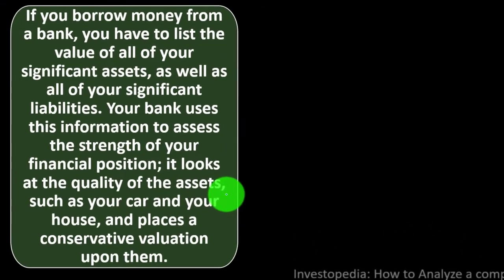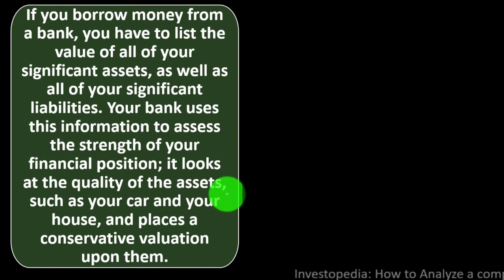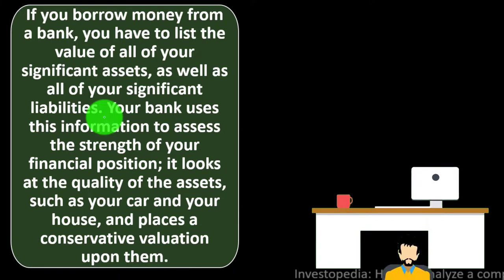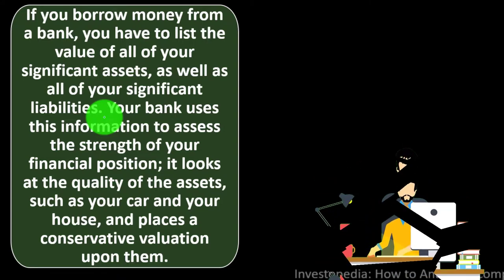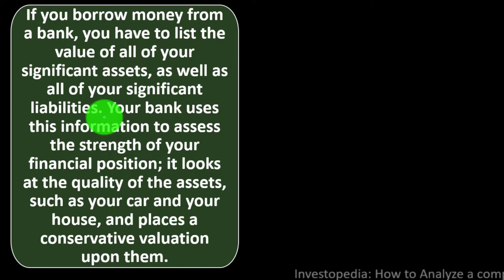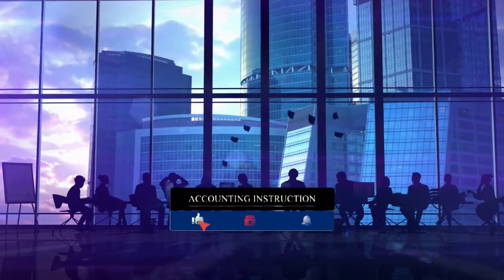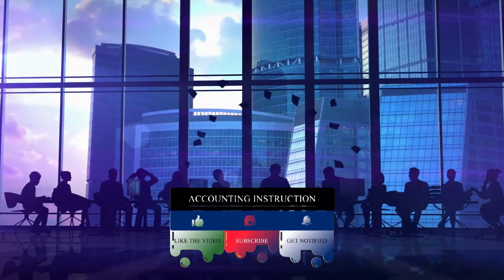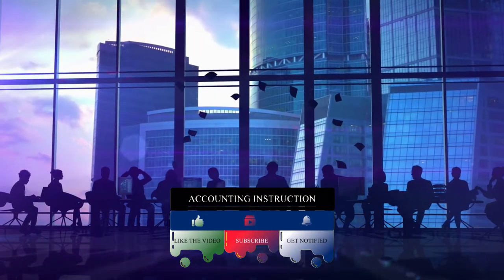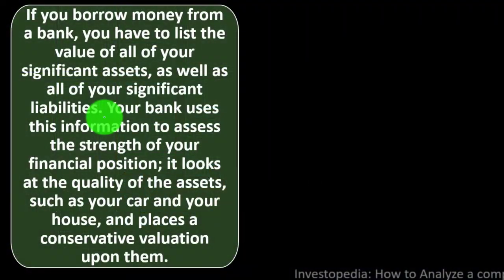If you borrow money from a bank, you have to list the value of all your significant assets and liabilities. Similarly, when we try to get financing — a loan to buy a house, for example — the bank examines our financial position. The same applies to corporations seeking capital to grow: going from private to public, selling stocks on an exchange. The bank asks similar questions of us as investors ask of companies.